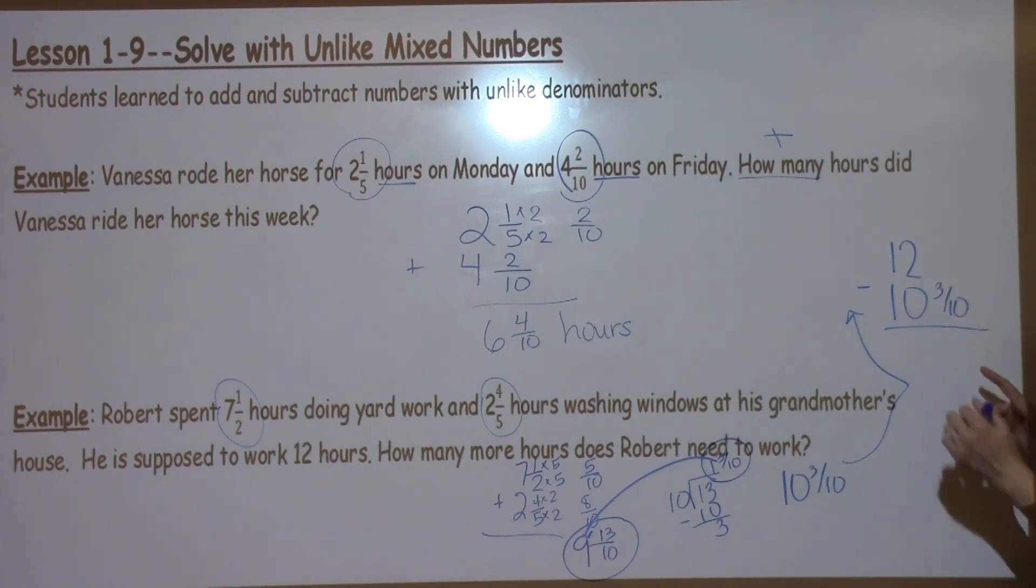As we talked about in the previous lesson, we don't have a fraction over here. So we need to borrow from our whole number. This is going to become an 11. I'm going to have that whole. It's going to become a whole over here, which is 10 tenths. 10 tenths minus 3 tenths is 7 tenths. 11 minus 10 is 1. So Robert needs to work 1 and 7 tenths more hours to complete his 12 hours at his grandmother's house.